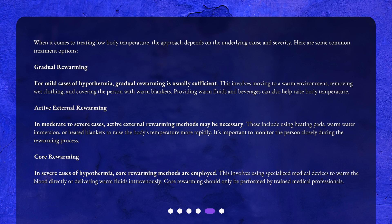Active external re-warming. In moderate to severe cases, active external re-warming methods may be necessary. These include using heating pads, warm water immersion, or heated blankets to raise the body's temperature more rapidly. It's important to monitor the person closely during the re-warming process.